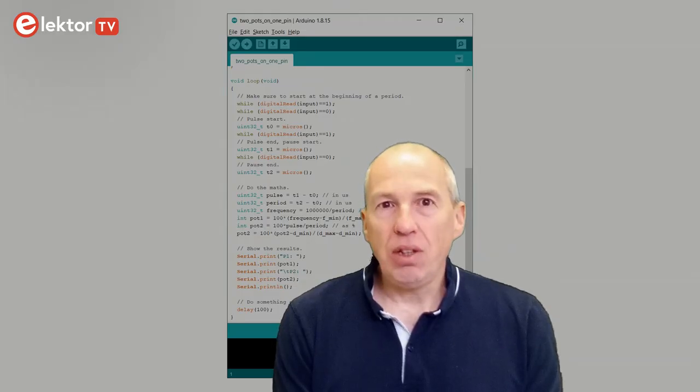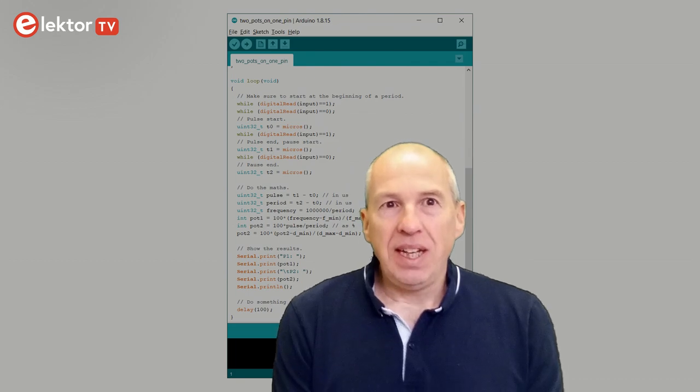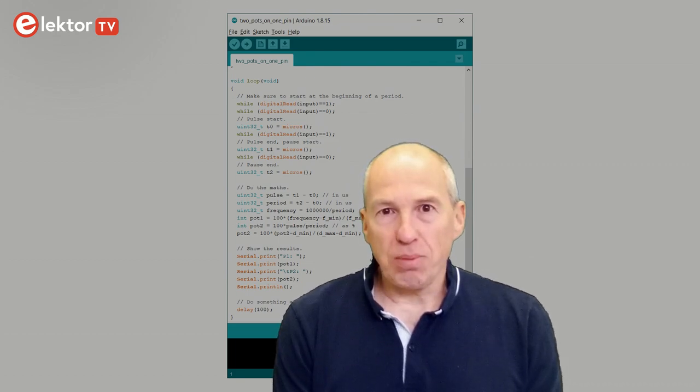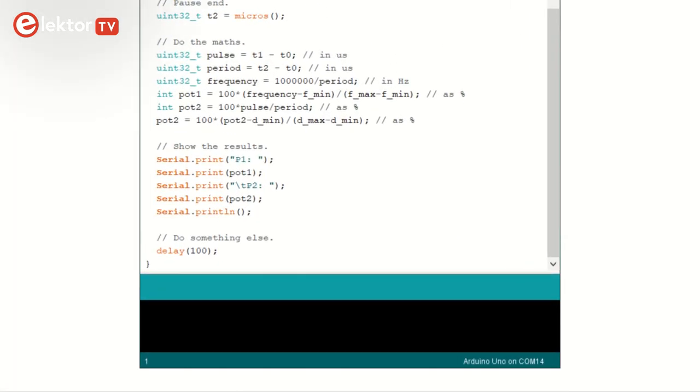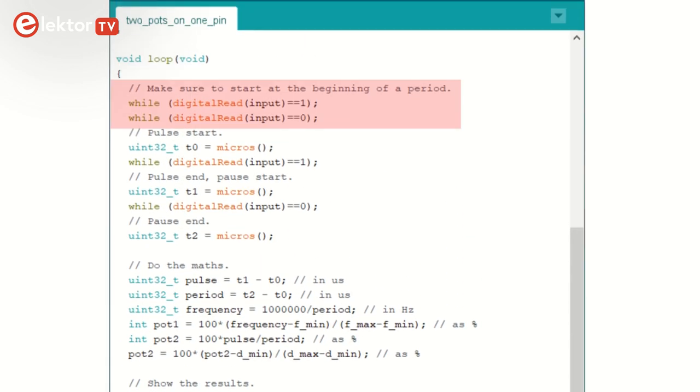The software required to decode the modulated rectangle signal can remain quite simple. As usual, there are several approaches possible. The method I used is to make the main loop check the signal every once in a while. As the minimum frequency is 250 Hz, there is no point in doing this at a super high rate. Every 10 milliseconds or so is good enough. Then the program waits for a level change, or edge, of the signal to occur. You must always use the same edge. I chose a rising edge.